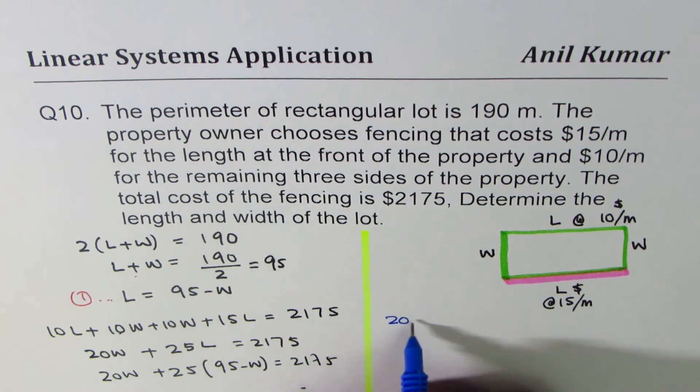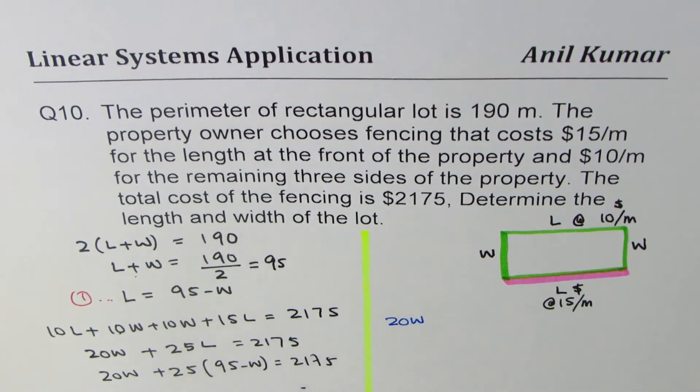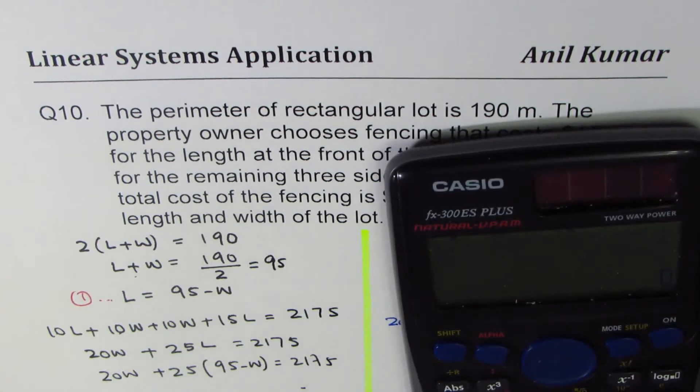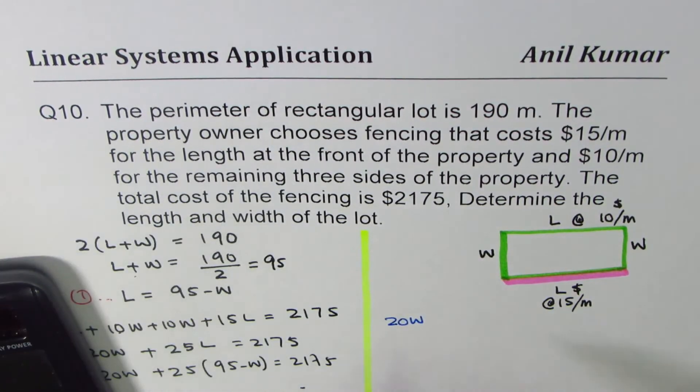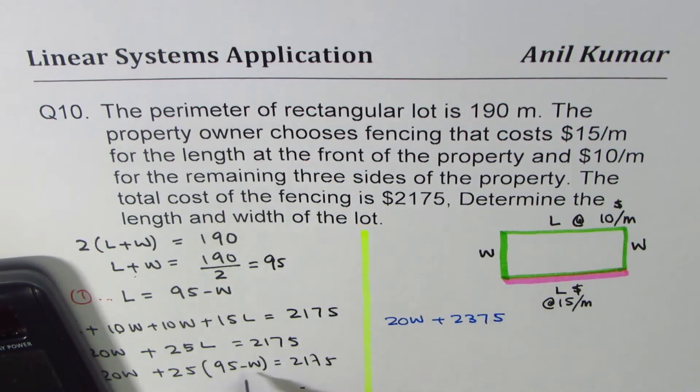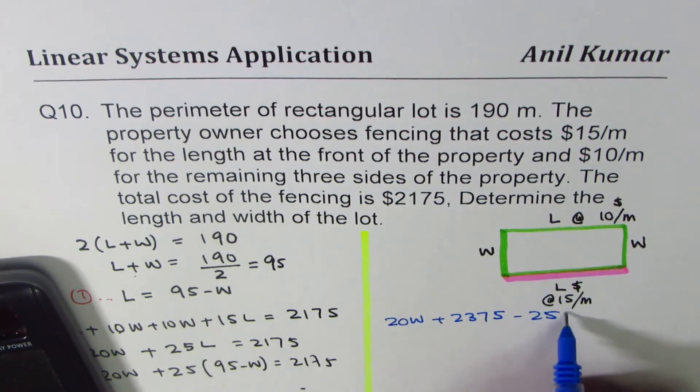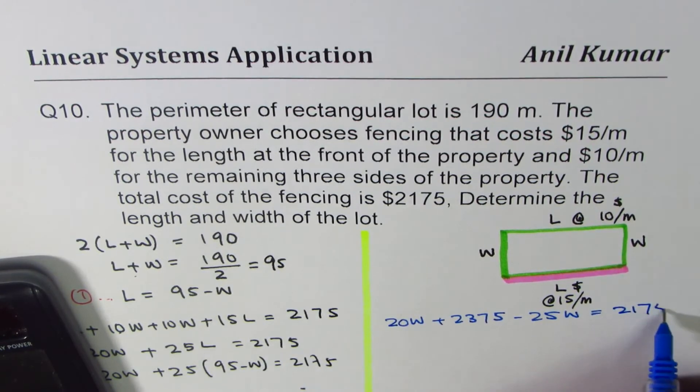Okay. So we can open this up. We get 20W, 25 times 95. Let's do 25 times 95 equals to 2375. So we have 2375 minus 25W equals to 2175.